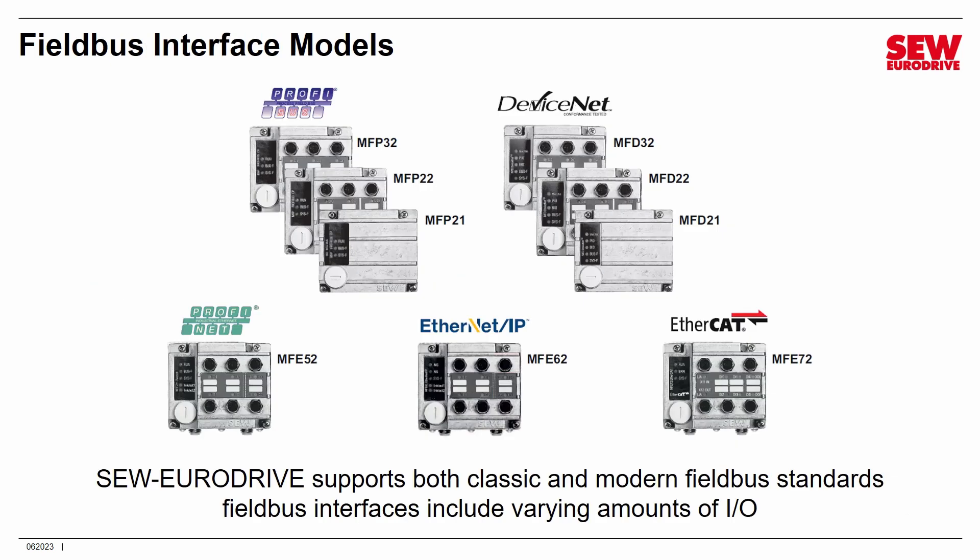There are a lot of field bus interface modules. We have several that support PROFIBUS and DeviceNet, and three Ethernet models — one for PROFINET, one for Ethernet IP, and one for EtherCAT. There's also a module for the INTERBUS field bus standard, which is not very common these days but still possible to encounter. These modules include varying amounts of I.O., so you need to look at the individual specifications to know exactly what you're getting.